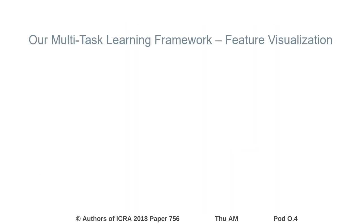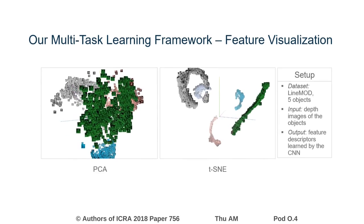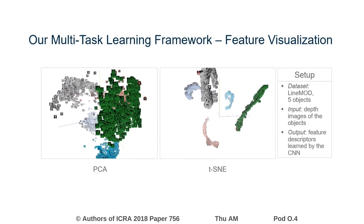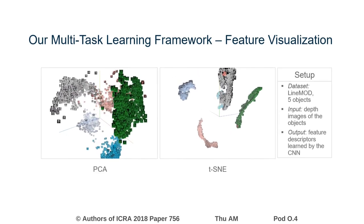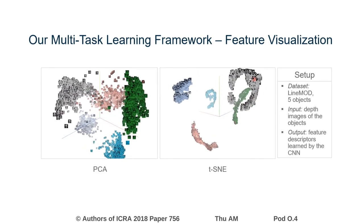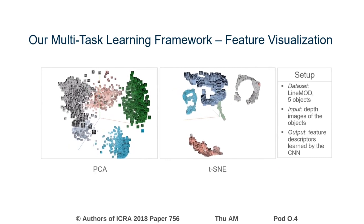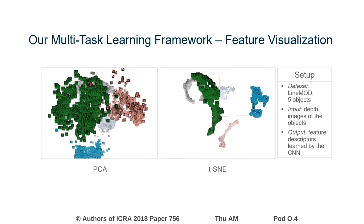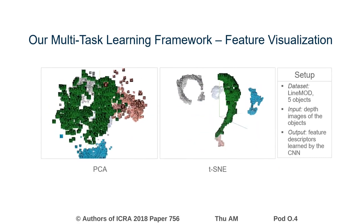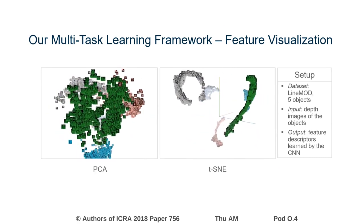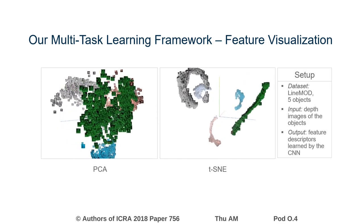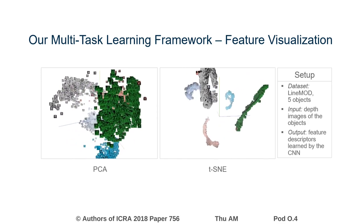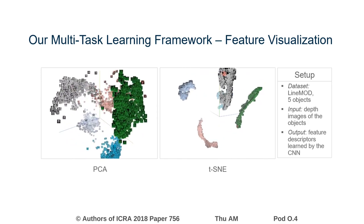In conclusion, we have presented a multi-task learning framework combining the strengths of both pose regression and manifold learning to obtain more robust feature descriptors. As a result, this boosts our method's performance in both aspects: object recognition as well as pose estimation.